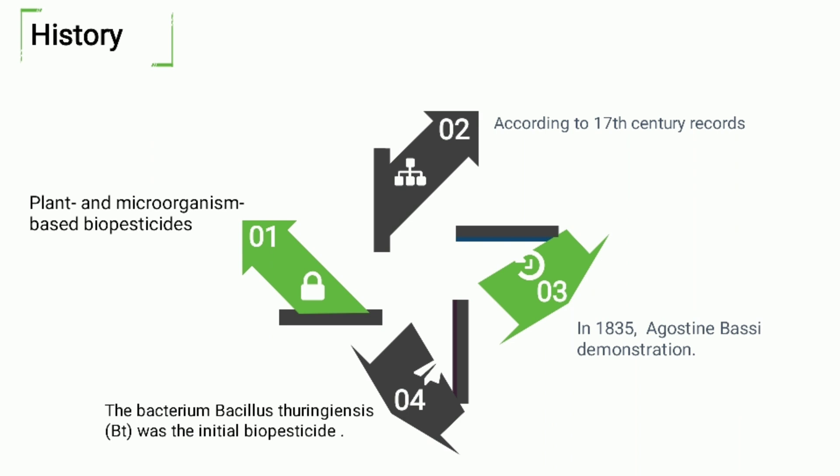The bacterium Bacillus thuringiensis (Bt) was the initial biopesticide and has the most widespread use to this day. In 1901 it was isolated from a diseased silkworm by Japanese biologist Shigetane Ishiwata.